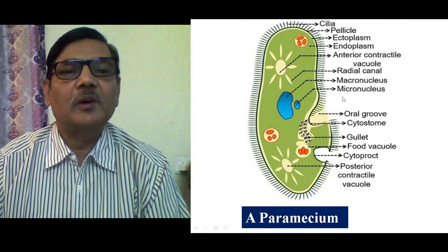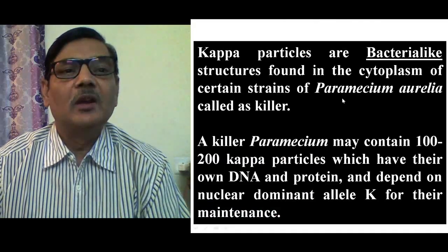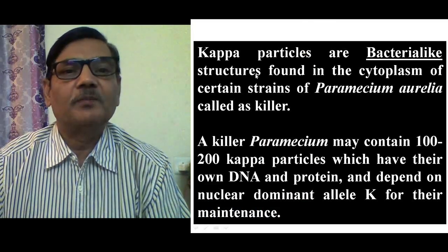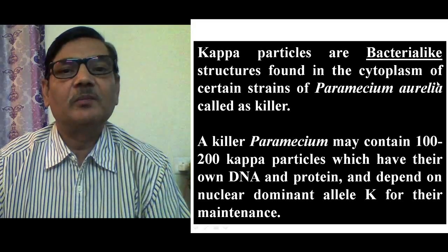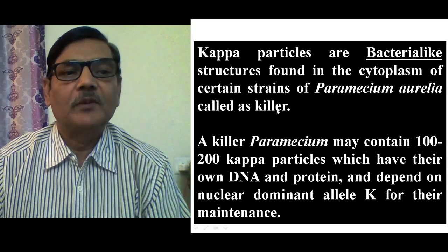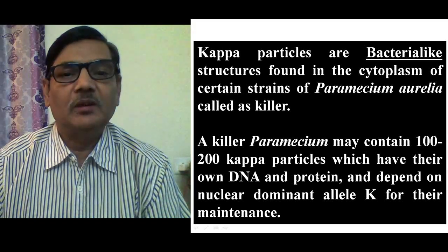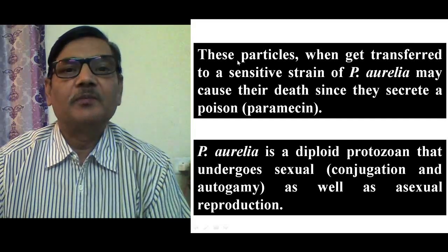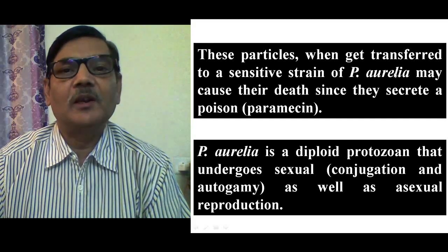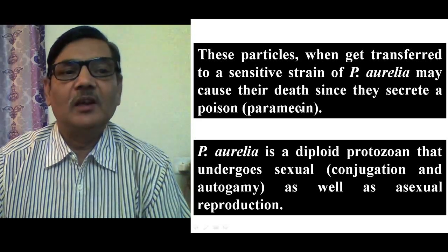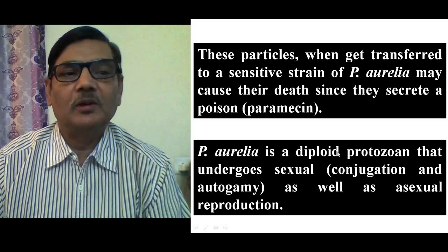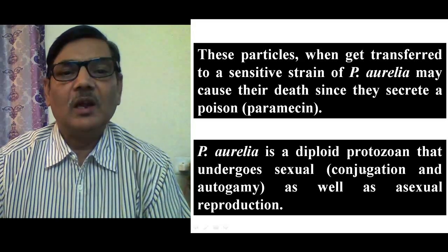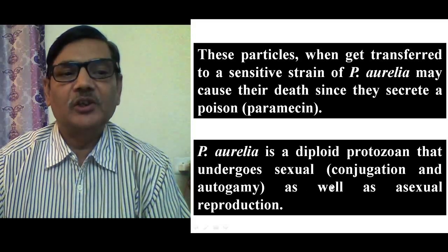Let us see the fate of kappa particles and how they get inherited to further generations. Kappa particles are bacteria-like structures found in the cytoplasm of certain strains of Paramecium aurelia, and such strains are called killers. A killer Paramecium may contain 100 to 200 kappa particles, which have their own DNA and protein, and depend on the nuclear dominant allele capital K for their maintenance. These particles, when transferred to a sensitive strain, may cause their death since they secrete a poison substance called paramecin. Paramecium aurelia is a diploid protozoan that undergoes sexual reproduction through conjugation and autogamy, and can also reproduce asexually through binary fission.